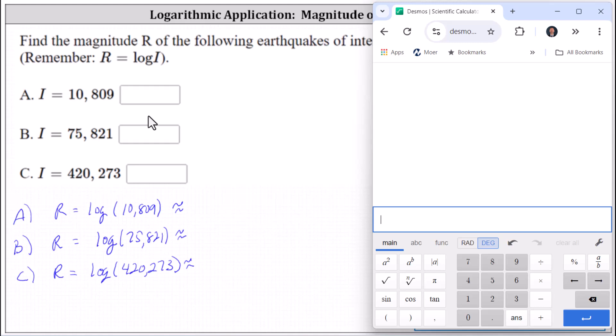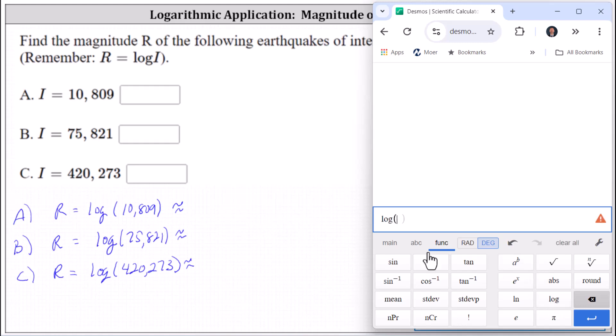I'll be using the Desmos Scientific Calculator. From the main tab, we need to press Functions for a common log, which is here in the lower right-hand corner. Go back to the main tab.